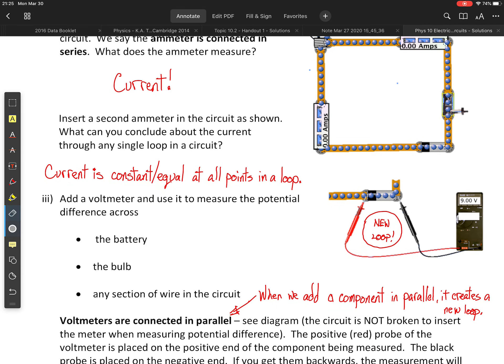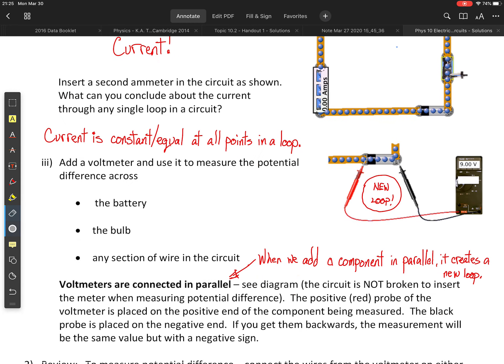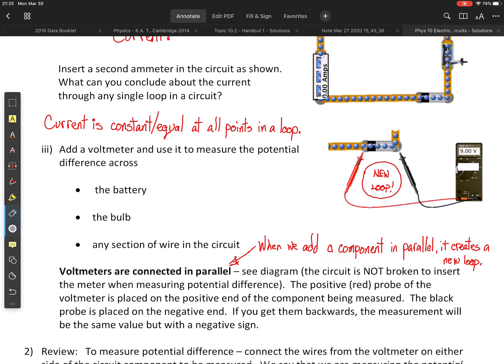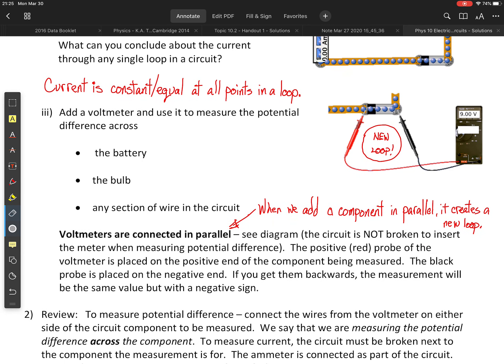All right, next, part three, you are asked to add a voltmeter and use it to measure the potential difference across the battery, the bulb, and any section of wire in the circuit. Remember that when you measure volts, you're measuring energy per charge. Okay, so that's one way to think of this idea of potential difference.